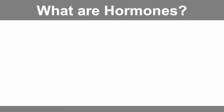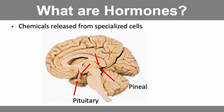Now I want to explain what hormones are and the five different characteristics of hormones. First, hormones are chemicals that are released from specialized cells. We can see two examples in the brain — the pituitary and the pineal glands. These contain specialized cells that release hormones, and we have specialized cells in endocrine glands throughout the body.